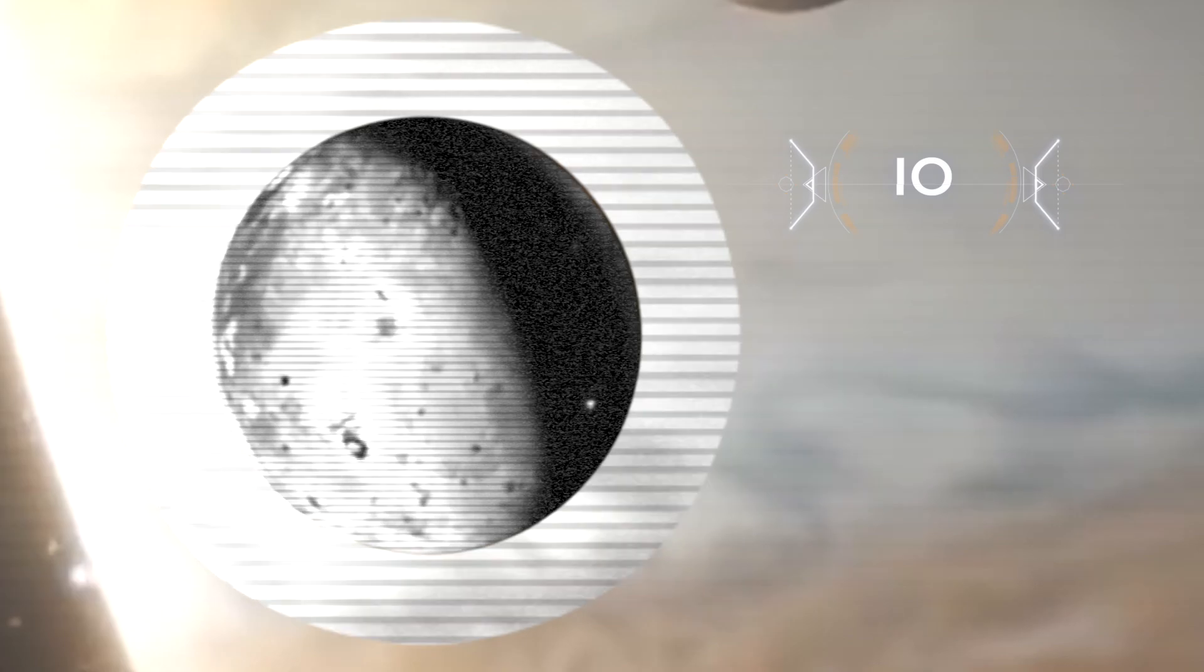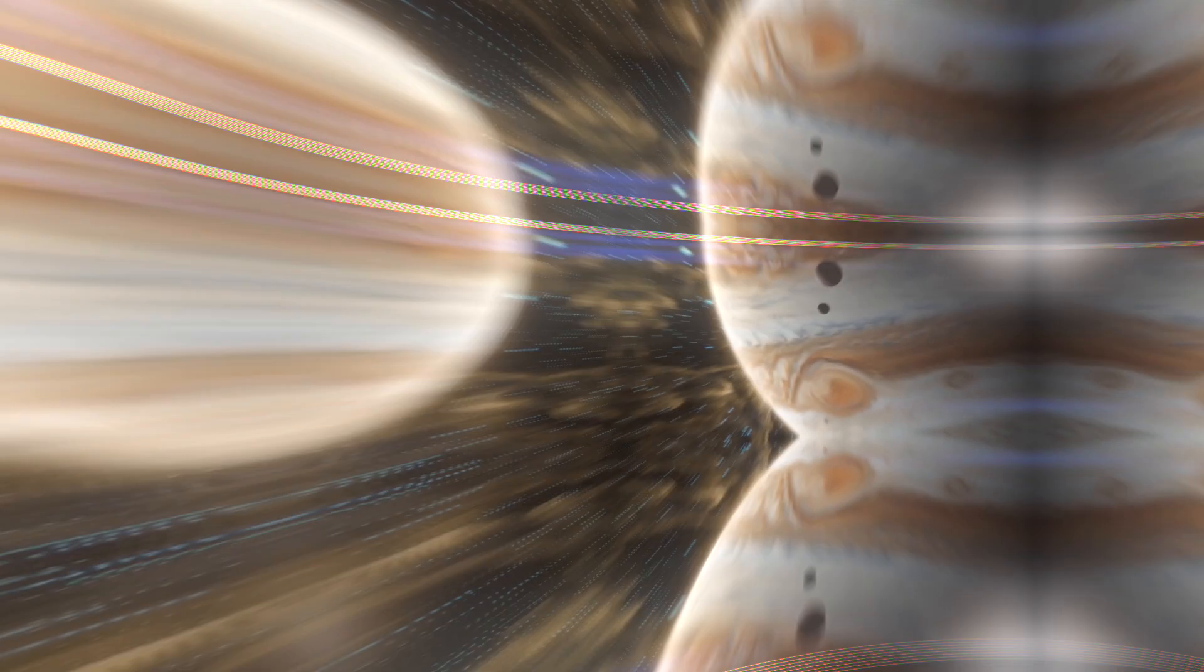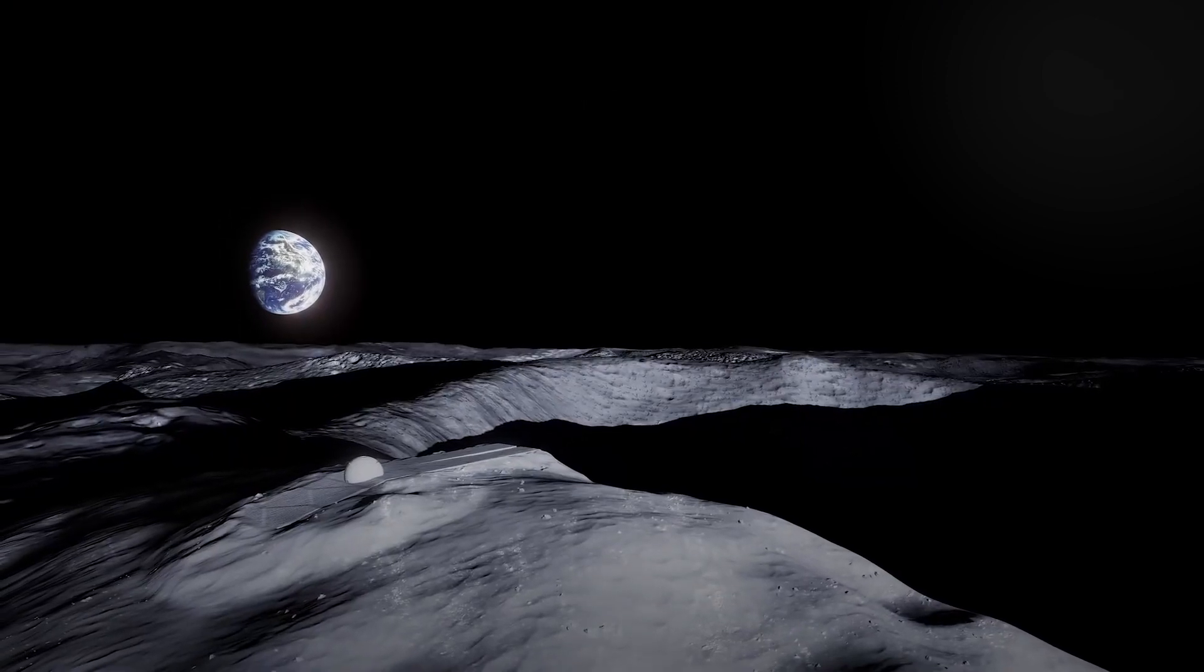Io is Jupiter's third largest moon, and it orbits the planet at a distance of 262,000 miles, just over the distance between the Earth and the moon.